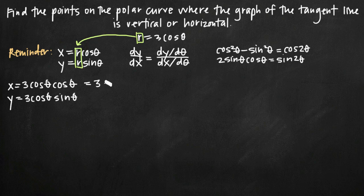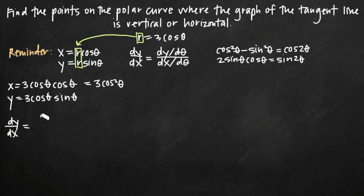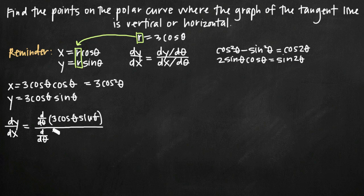We can simplify our formula for x and get 3 cosine squared theta. Now we have equations for x and y in terms of theta. To find the derivative in Cartesian coordinates, dy/dx equals dy/dθ divided by dx/dθ. Our dy/dθ is the derivative of 3 cosine theta times sine theta, and our dx/dθ is the derivative of 3 cosine squared theta.